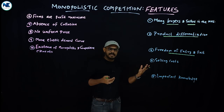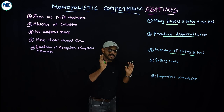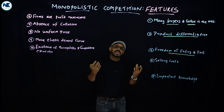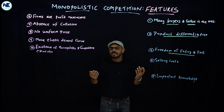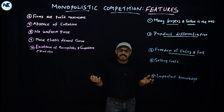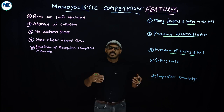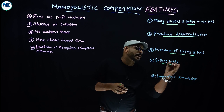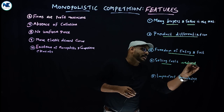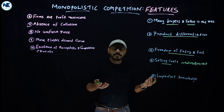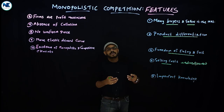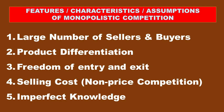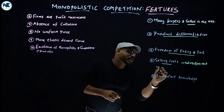The fourth feature is selling cost, which is another very important characteristic of monopolistic competition. Unlike production costs — which cover factors of production such as land, labor, capital, and organization — selling costs include expenditure on advertisements, free gifts, door-to-door services, R&D, and guarantees. Selling cost is a significant and important element distinguishing monopolistic competition.